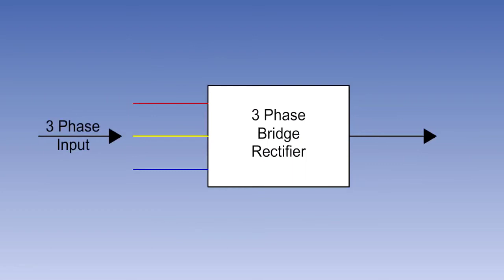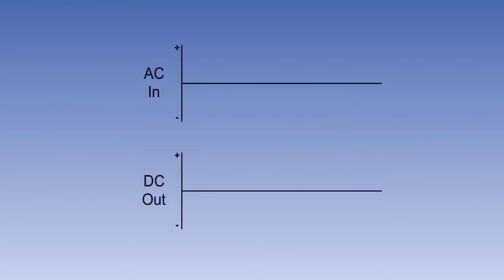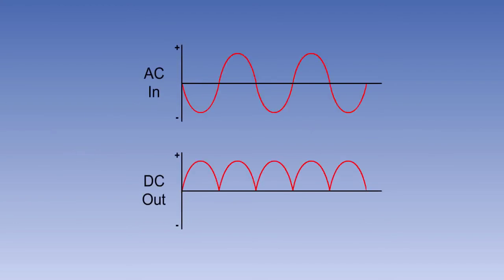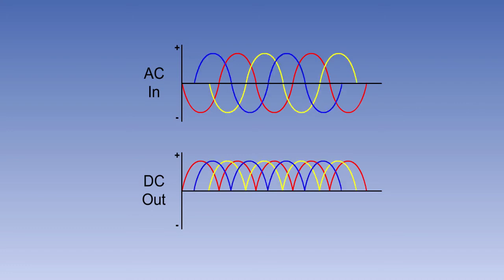The output of a bridge rectifier consists of pulses or ripples of DC, which usually need to be smoothed electronically before being used. A much smoother supply, without large peaks and troughs, can be produced from a three-phase supply by using a three-phase bridge rectifier. A three-phase rectifier superimposes the full-wave rectified output from all three phases on top of each other, thus producing a much smoother output than a single-phase rectifier. The output of a three-phase rectifier can therefore be considered to be a steady DC voltage.